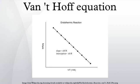From the definition of Gibbs free energy, where S is the entropy of the system, and from the Gibbs free energy isotherm equation, these expressions are combined to obtain a relationship between the equilibrium constant and thermodynamic quantities.